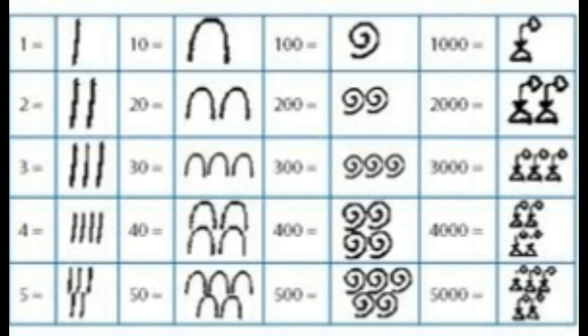One human finger symbolized the number ten thousand. The number one hundred thousand was represented by a tadpole or frog. A god or man with both hands raised was the symbol for a million, sometimes used as infinity.